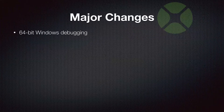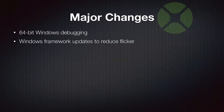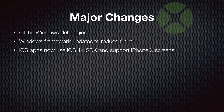Some of the major changes: 64-bit Windows debugging finally arrived. This is one of the last components to our 64-bit transition, and all of our Windows users were thrilled to be able to run their builds in 64-bit and use the debugger. In addition, a big change was made to the Windows framework to reduce the flicker often seen in standard Win32 UI controls. iOS apps were also updated to use the latest iOS SDK to support iPhone X screens, which were pretty new at the time.